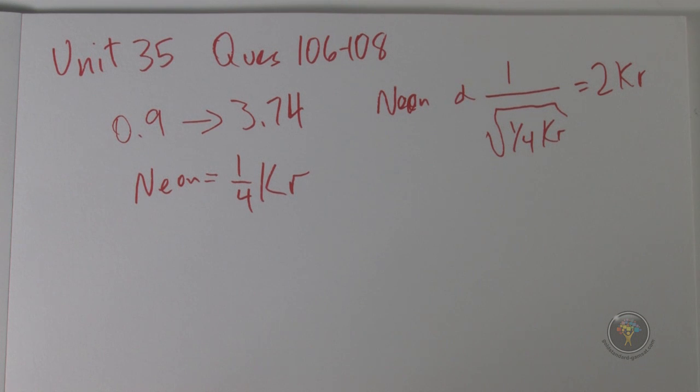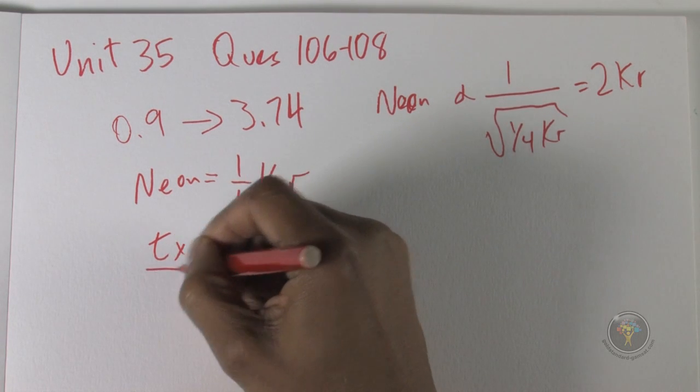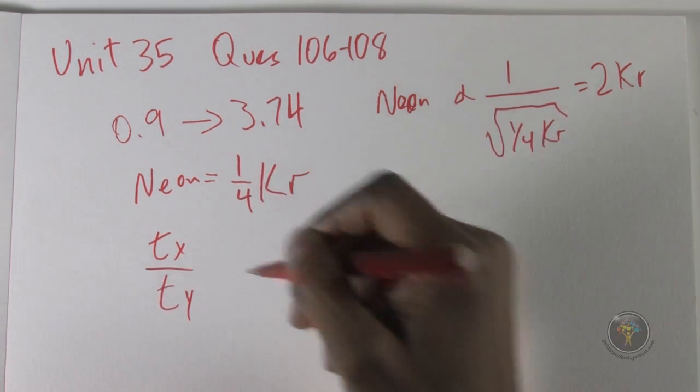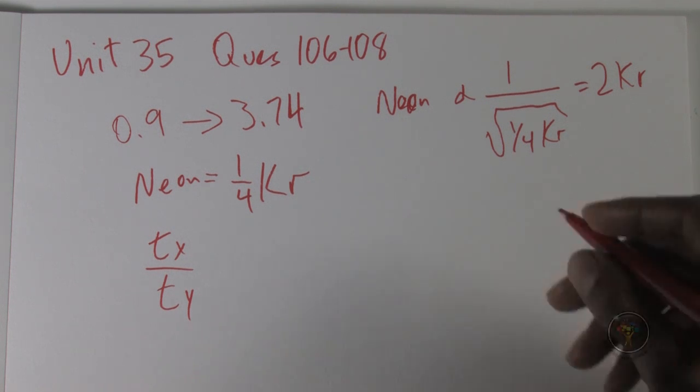If the time taken to release a certain volume of gas X is tx, and the time taken to release the same volume of gas Y is ty, then the ratio of tx to ty?